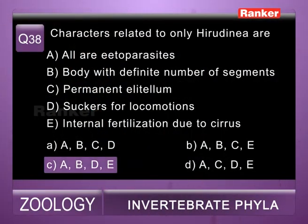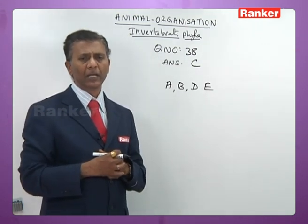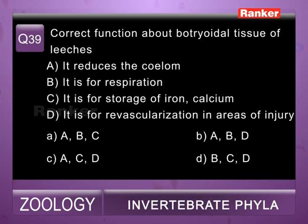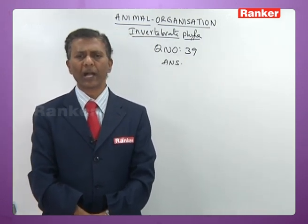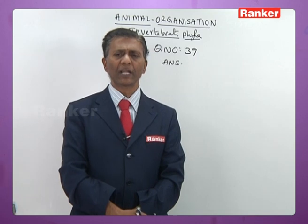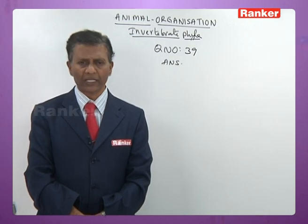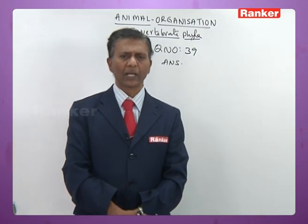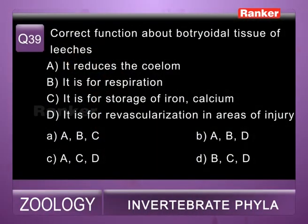Thirty-ninth question: correct function of botryoidal tissue of leeches — a) it reduces coelom (correct — coelom is replaced by botryoidal tissue), b) it is for respiration (wrong), c) storage of iron and calcium (correct), d) revascularization in areas of injury (correct). So correct options are a, c, and d. Answer for thirty-ninth question is c.